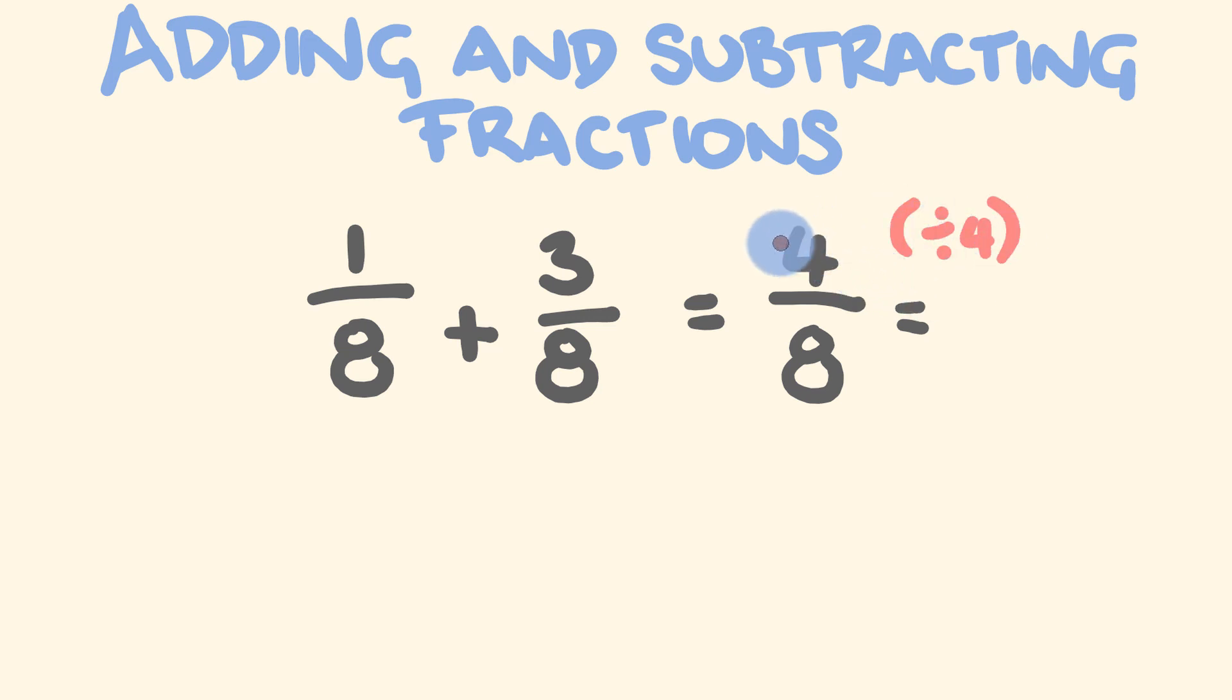The top number by 4 and we divide the bottom number by 4. 4 divided by 4, we get the answer of 1. 8 divided by 4, we get the answer of 2. So there's our answer. 1 eighth plus 3 eighths is equal to 4 eighths, which can be simplified down to a half.